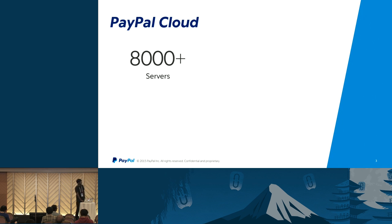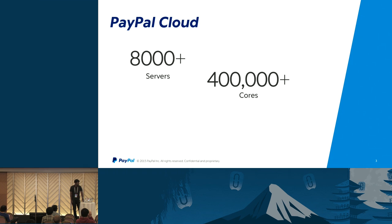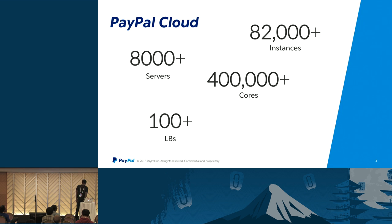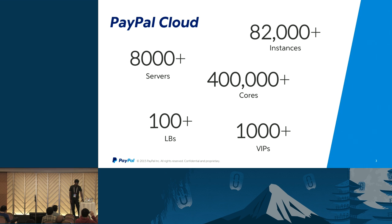Some numbers to show the scale of OpenStack in production at PayPal: we have about 8,000 hypervisors, which translates to about 400k cores, running 82,000 VMs. We have hundreds of LBs, which resulted in thousands of VIPs being created. They are actively created, and most of the time in QA you can see VIPs being created and deleted often.